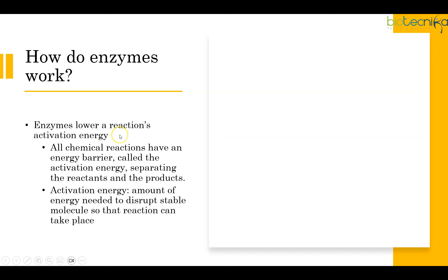Enzymes lower a reaction's activation energy. All chemical reactions have a chemical barrier which is called activation energy. The substrate is already stable in a form and if it has to be converted to product, the bonds within the substrate need to be destabilized — it should go to something called a transition state. For that the substrate needs to be activated, then only it can convert into the product. The energy required to get the substrate to the transition state is what is called activation energy. It varies from reaction to reaction; some steps in an enzymatic reaction may have high activation energy, and in those cases the reaction rate will be very slow.